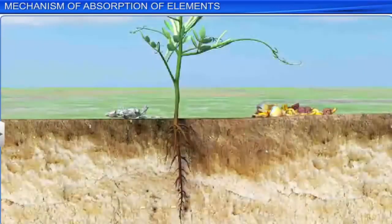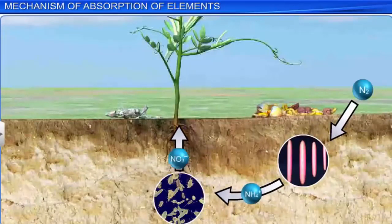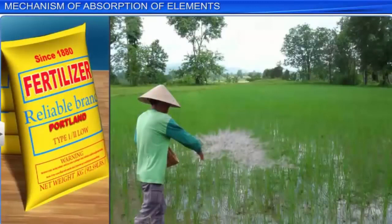Soil also contains microbes such as nitrogen fixing bacteria, which help plants by fixing nitrogen from the atmosphere into the soil. The deficiency of minerals in the soil affects the plant, and hence fertilizers that have the deficient mineral are added to the soil to ensure the supply of the deficient element to the plant.